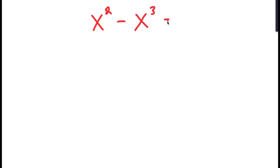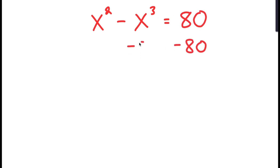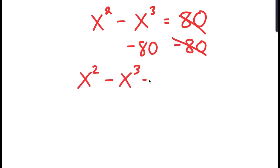All right, so in this video I'm going to solve the equation x to the power of 2 minus x to the power of 3 is equal to 80. To solve this equation, I'm going to first start by subtracting 80 on both sides, so I get x squared minus x cubed minus 80 is equal to 0.